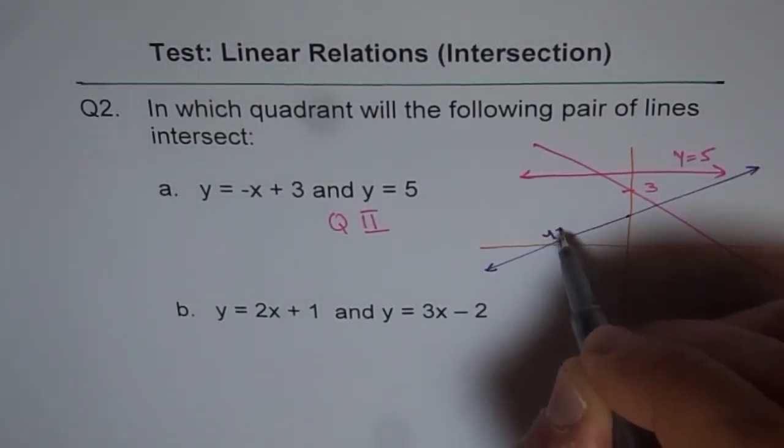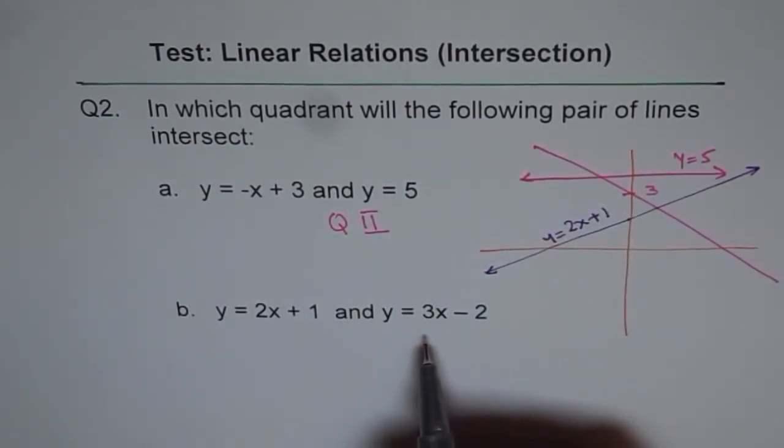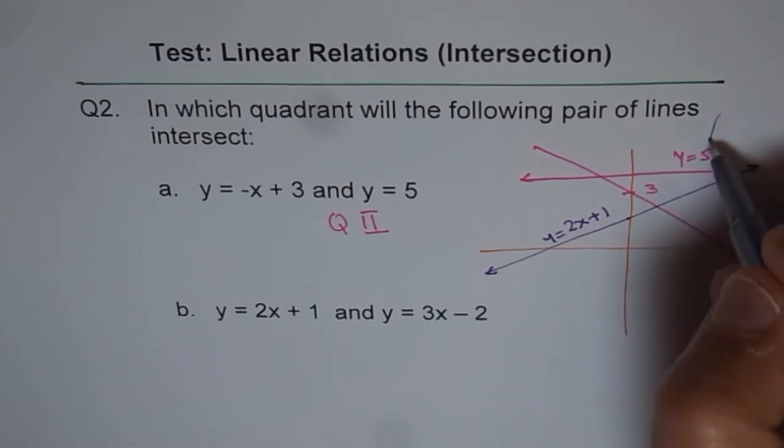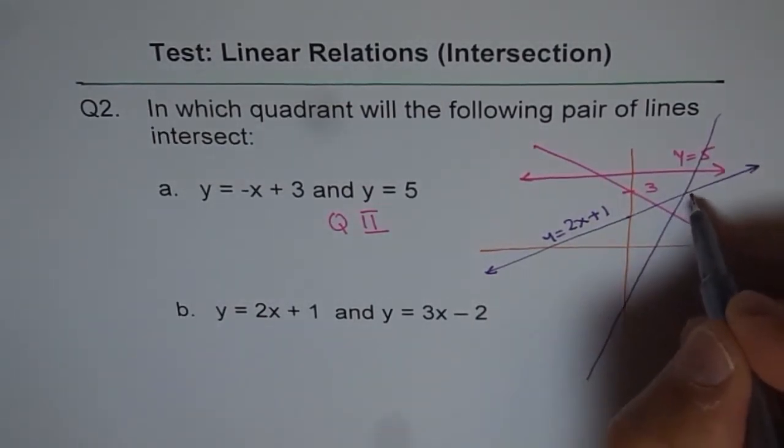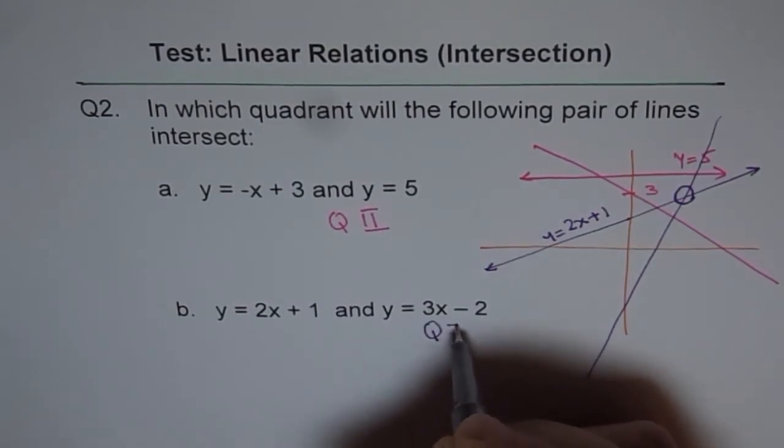So this is let's say y equals to 2x plus 1. And the other one which is having a slope here, minus 2 is more steeper. So it will go up and it will catch up. Do you see? So it will intersect in quadrant 1. So this answer is quadrant 1.